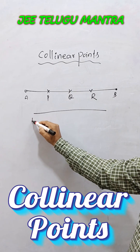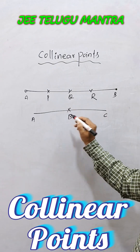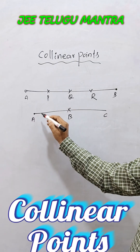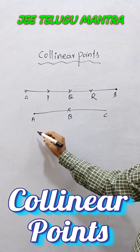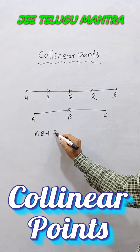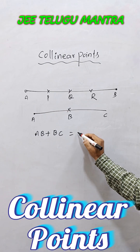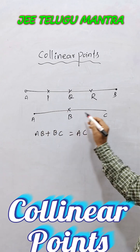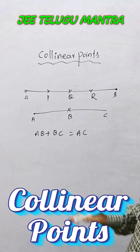Now we discuss with A, B, C on the same line. How can you show that these points are collinear points? You have to find out the distance between AB and the distance between BC. If the sum of AB and BC is equal to AC, then A, B, C are called collinear points.